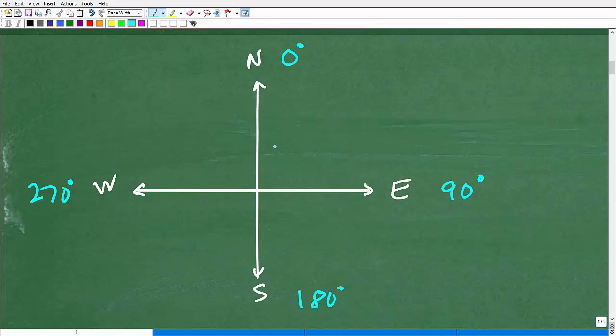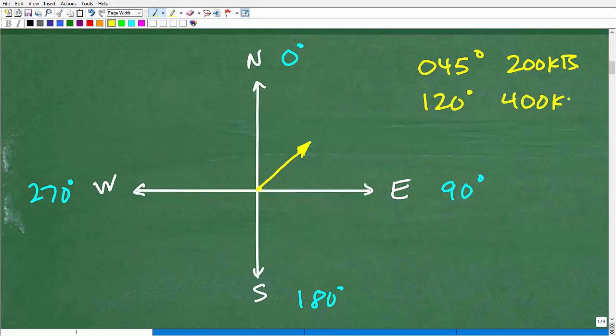So if an airplane is going, let's say, 045 degrees, that would kind of split the difference, at 200 knots. Maybe this would be an arrow. It's emanating right here. This is called a position vector, but we're going to represent this arrow like this.